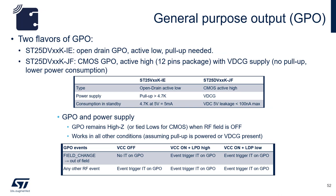There are two flavors of GPO and availability is based on certain device versions. Part numbers ending with IE support open drain GPO — an active load and a pull-up resistor are needed, and power consumption depends on resistor values and voltage used. Part numbers ending with JF support CMOS GPO, active high with VDCG supply, in a 12-pin package. The advantage of this version is power consumption, which can be less than 100 nanoamps.